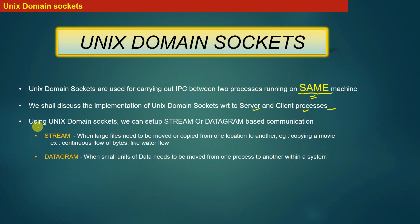Using UNIX domain sockets we can set up either a stream-based communication or datagram-based communication. In stream-based communication, the two communicating processes are involved in a continuous exchange of data in the form of bytes. For example, stream-based communication applies when large files need to be moved or copied from one location to another, such as copying a movie from one location of your hard drive to another.